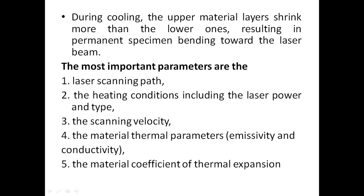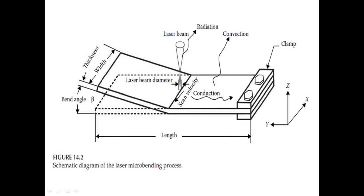The most important parameters in laser forming are: (1) laser scanning path; (2) heating conditions including laser power and type; (3) scanning velocity; (4) material thermal parameters — emissivity and conductivity; (5) material coefficient of thermal expansion. The figure shows a schematic diagram of a straight-line irradiation process that produces a bend angle from a flat sheet metal piece. The localized nature of laser irradiation yields high temperature gradients between the irradiated surface and neighboring material, forcing the material to expand non-uniformly, resulting in irregular thermal expansion between top and bottom surfaces.